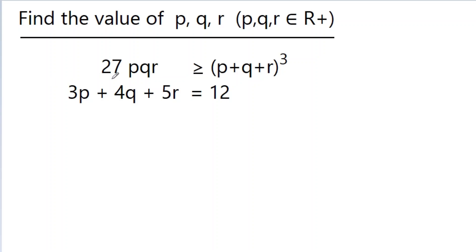In this video, we have given that 27pqr is greater than or equal to (p plus q plus r) to the whole cube, and 3p plus 4q plus 5r is equal to 12. We have to find the value of p, q, and r, where p, q, r belong to positive real numbers.